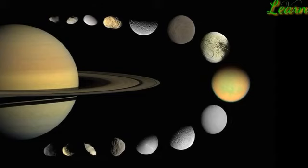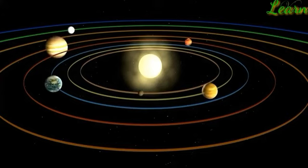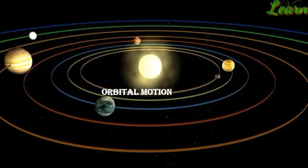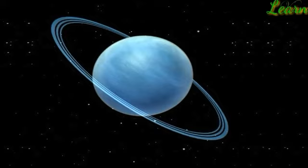Uranus, like Venus, also rotates from east to west. It has a highly tilted rotational axis so that during its orbital motion it appears to roll on its side. Neptune was discovered through mathematical calculation and has two known satellites. It also has rings.